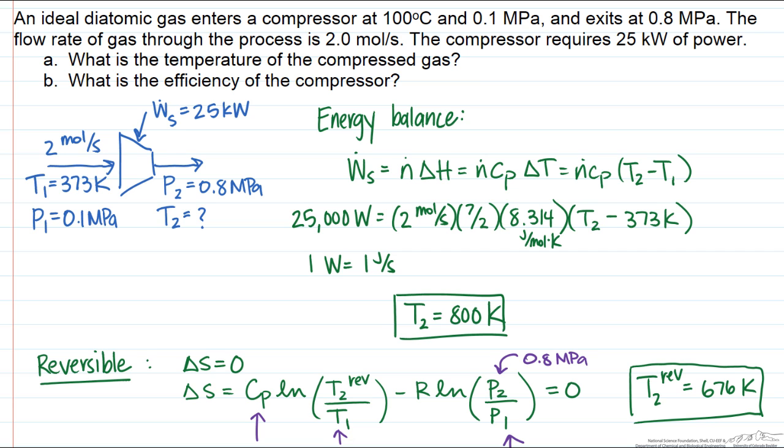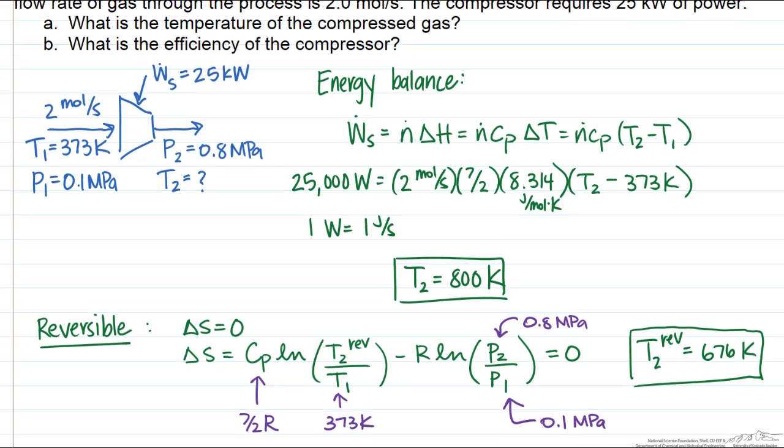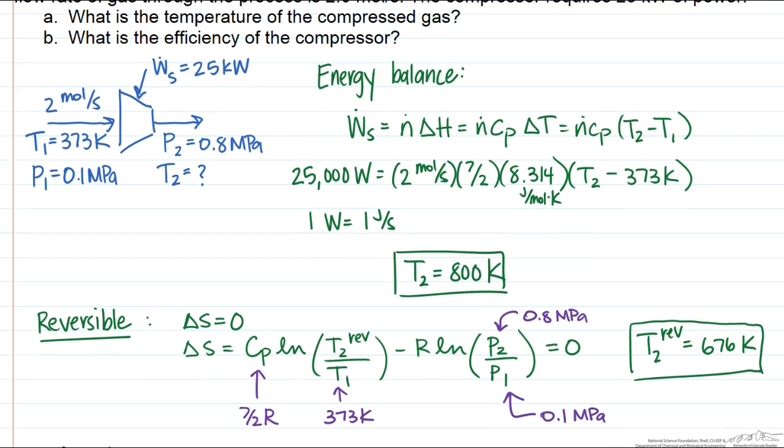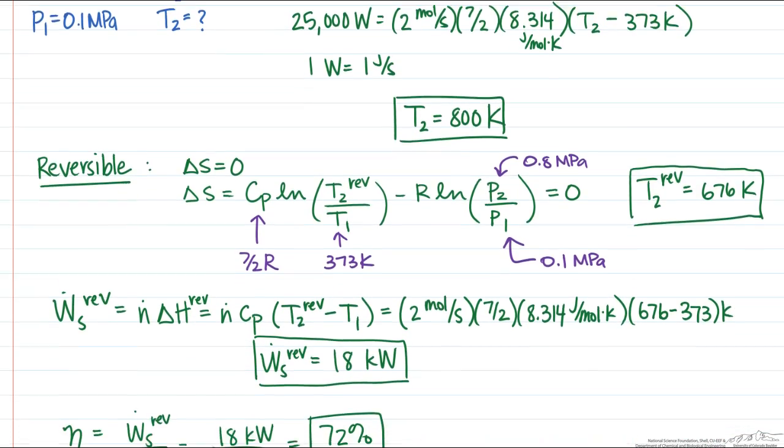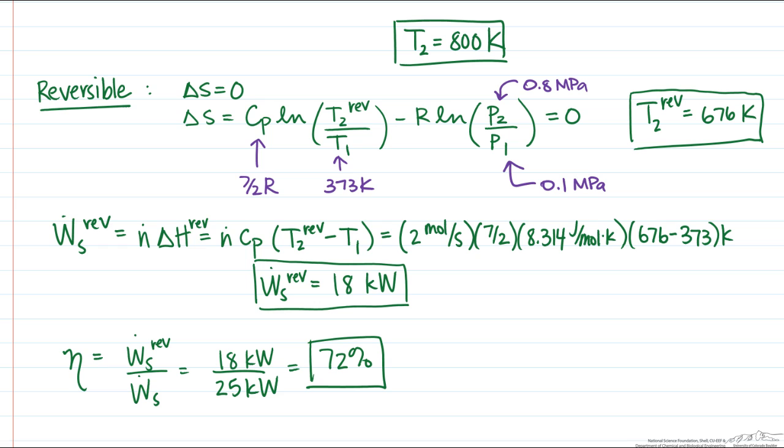And we're solving for the efficiency of the system, we need to first determine how a reversible compressor would behave. And a reversible compressor is a compressor for which the entropy change of the fluid is equal to 0. Once we solve for that outlet temperature T2 for the reversible case, that allows us to now re-solve the energy balance for the reversible work, and therefore determine the efficiency in terms of the reversible work divided by the actual work.